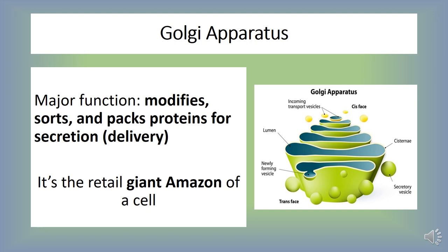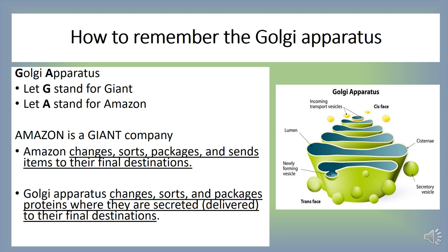The endoplasmic reticulum transports some of those proteins to the Golgi apparatus, where they're modified, sorted, and sent out for delivery. It's kind of like the retail giant Amazon of a cell. To remember what the Golgi apparatus does, take the first two initials and remember: Giant Amazon. Amazon sorts, packages, and sends items to their final destinations — and the Golgi apparatus changes, sorts, and packages proteins, which are then secreted and delivered to their final destinations.